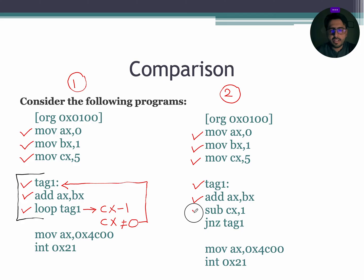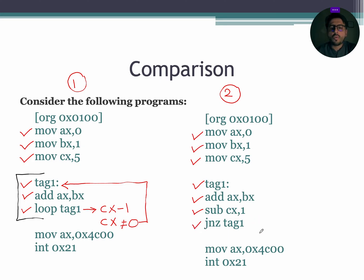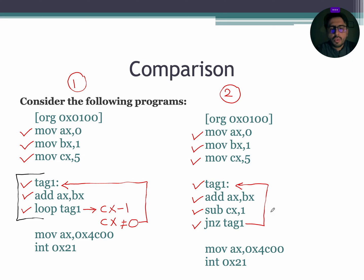The next instruction is SUB CX, 1. This instruction will decrement the value of CX by 1, so CX will become 4. As after subtraction the answer is not equal to 0, the zero flag will be 0. The next instruction is JNZ tag1. JNZ checks the status of the zero flag — if zero flag equals 0, it is going to jump to the declared tag; else it exits the loop. So for the given scenario, as the zero flag is 0, it is going to jump back to tag1.